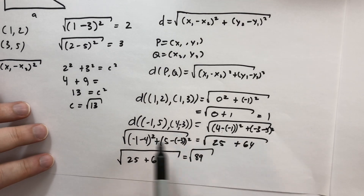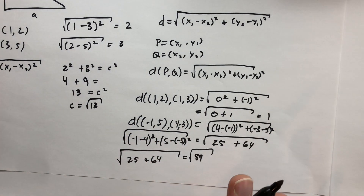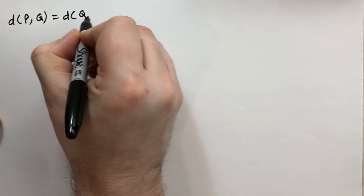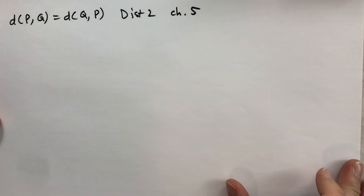At this point, he gives a warning: always be careful when you meet minus signs — place the parentheses carefully and remember the rules of algebra. We can calculate distance between points in any order. The distance between P and Q is the same as the distance between Q and P. This is actually the dist2 property from chapter 5.